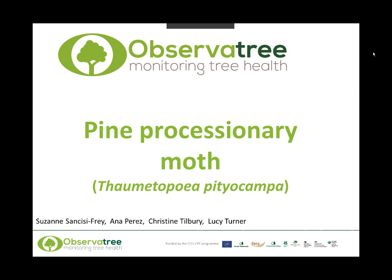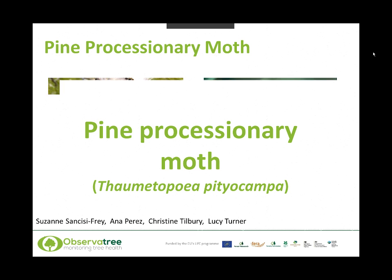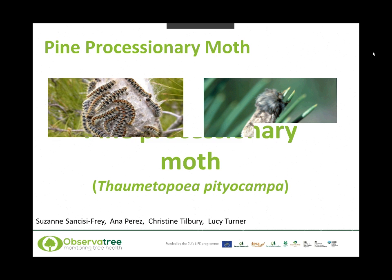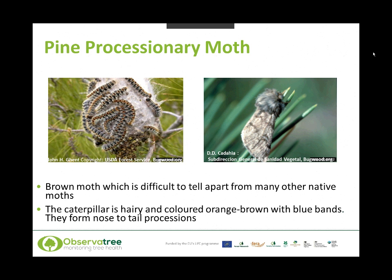We're covering the pine processionary moth, which is a destructive insect that attacks pine trees. Here on the right hand side we have an adult pine processionary moth. They look very similar to the oak processionary moth with their grey forewings and brown markings, and because they are fairly indistinctive looking they can be difficult to tell apart from other moths. Here on the left hand side you can see the larva or caterpillars, which are hairy and coloured orange-brown with blue bands. This is the stage that causes all the damage, and like the oak processionary moth, the larva move around in nose-to-tail processions.